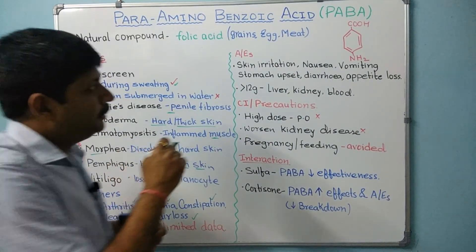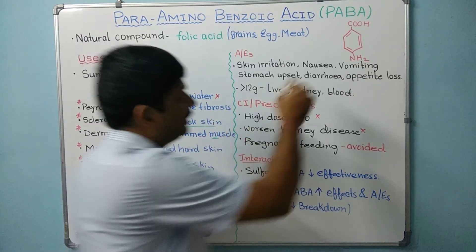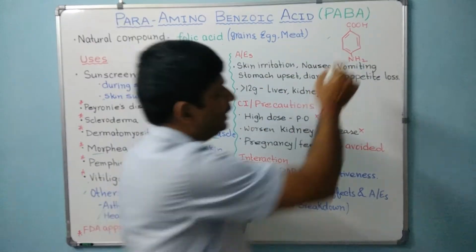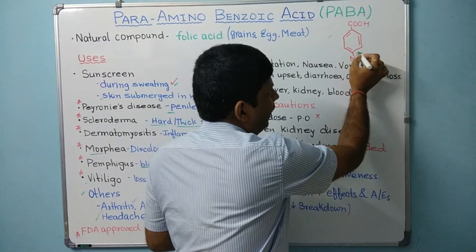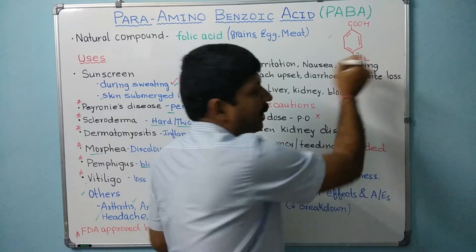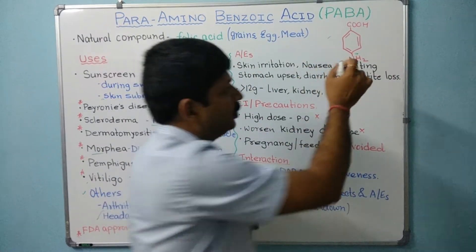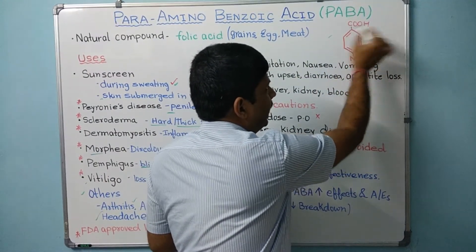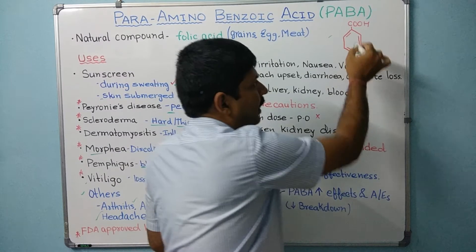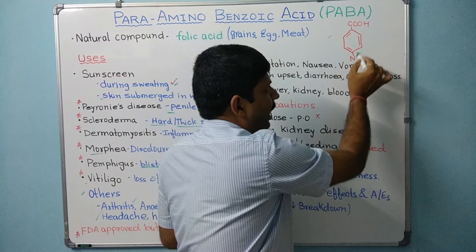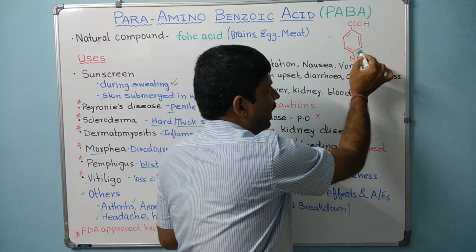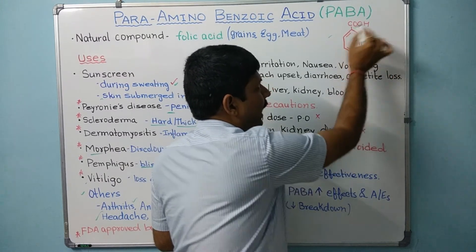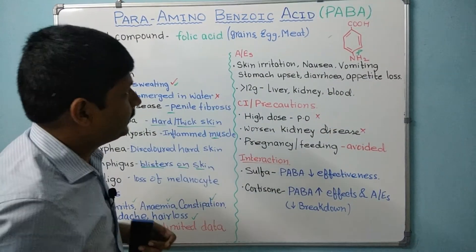Before going to the adverse effects, let's look at the structure of para-aminobenzoic acid. The amino group is at the para position of the benzoic acid ring — hence the name para-aminobenzoic acid. This is the chemical structure.